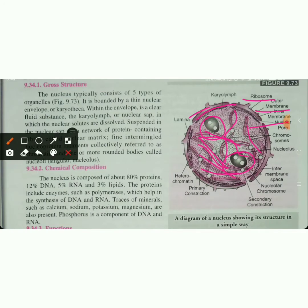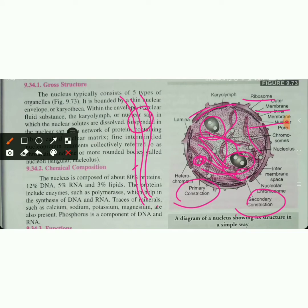There are two kinds of constrictions on chromosomes: primary constrictions and secondary constrictions. There is also a nuclear lamina present inside the nuclear envelope.